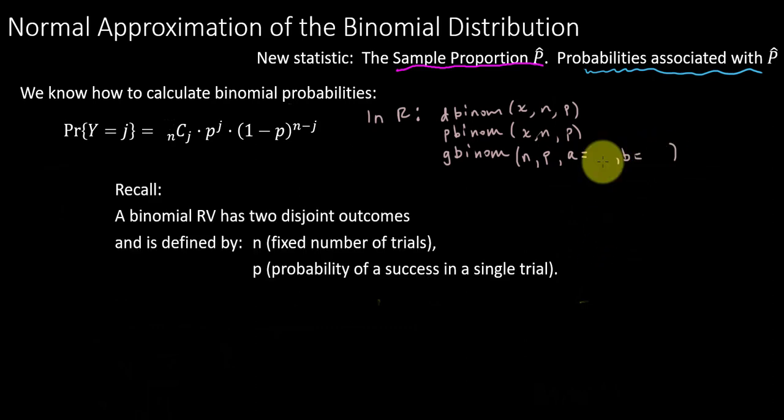As a quick recall, remember the binomial random variable, we have the two outcomes that we call success or failure. They are disjoint. And as you notice, n and p is always showing up for binomial probabilities because those are the two parameters that define a binomial variable.